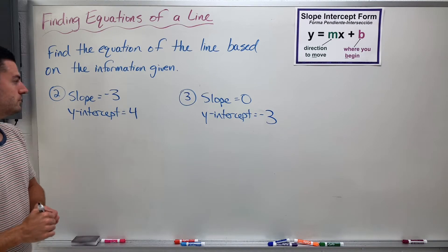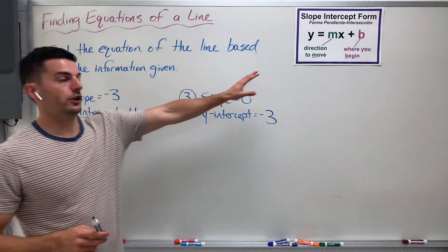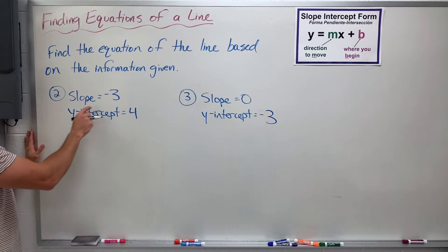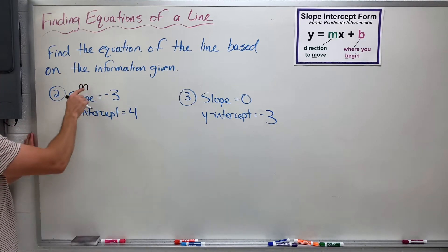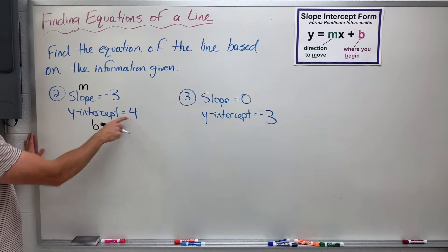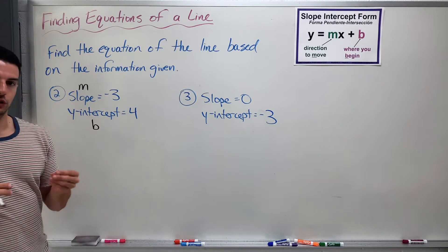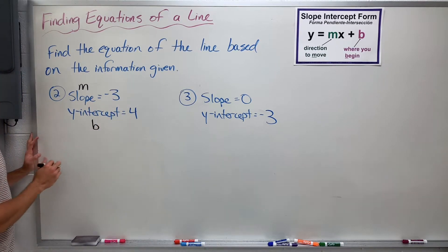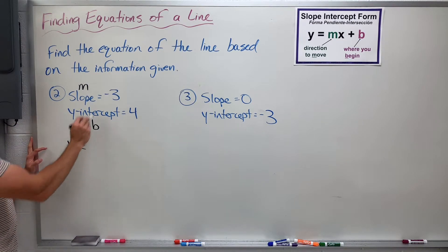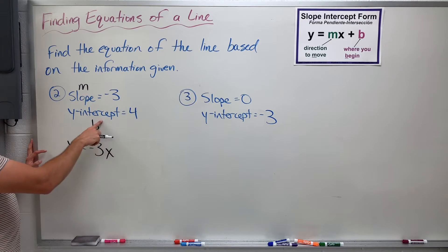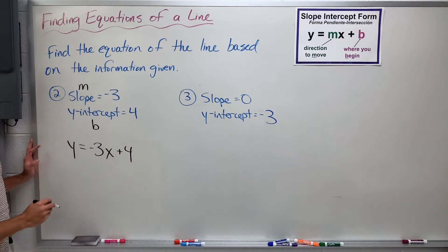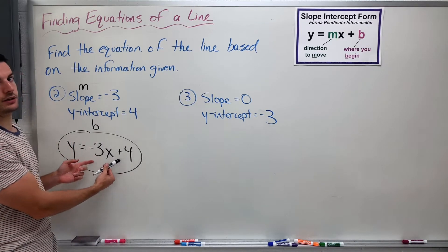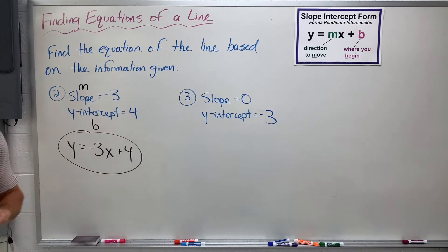If you know your slope-intercept equation, you might realize you're given just about everything you need — and you are. When it says slope, that's M. When it says y-intercept, that's B. So it really helps to know what these letters stand for so you can quickly jump in and answer. If my slope is negative 3, putting that into the equation: y equals negative 3 times x, plus the y-intercept positive 4. So that's it — y equals negative 3x plus 4. This is an easy scenario because you're given all the information you need to put into your equation right away.